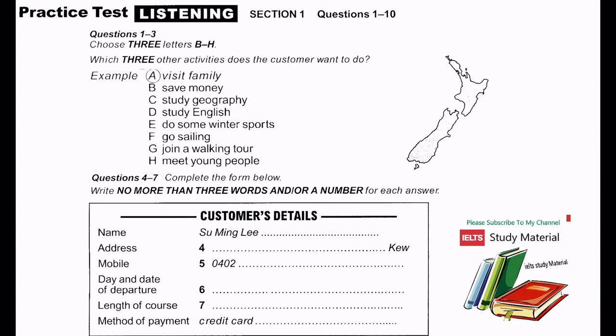You will hear a number of different recordings, and you will have to answer questions on what you hear. There will be time for you to read the instructions and questions, and you will have a chance to check your work. All the recordings will be played once only. The test is in four sections. Write all your answers on the question paper. At the end of the real test, you will be given ten minutes to transfer your answers to an answer sheet. Now turn to Section 1.